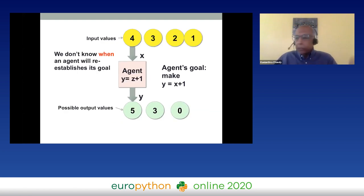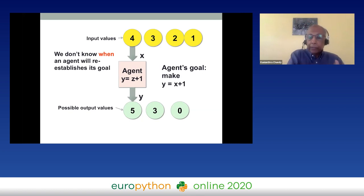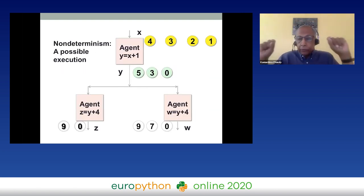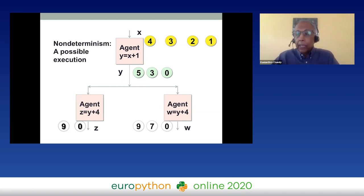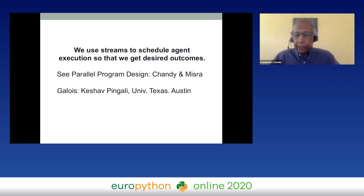The tricky part is that we don't know exactly when an agent will take a step. If inputs are 0, 1, 2, 3, 4 but the agent only sees inputs 2 and 4, the output will skip steps. Two identical agents computing the same function may produce different outputs. The key is to use streams to obtain desired outcomes — sometimes non-deterministic, sometimes deterministic — using theories developed by J. Deb Misra and ideas from Kishap Bengali.